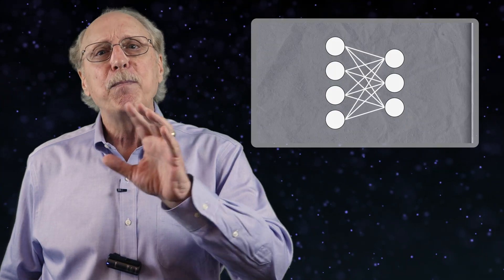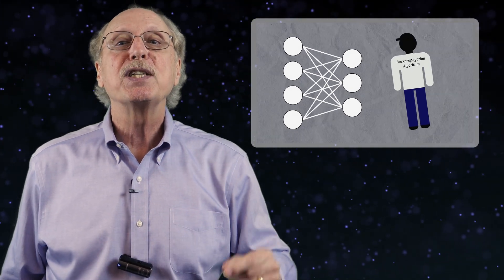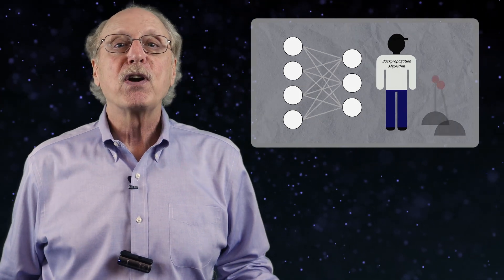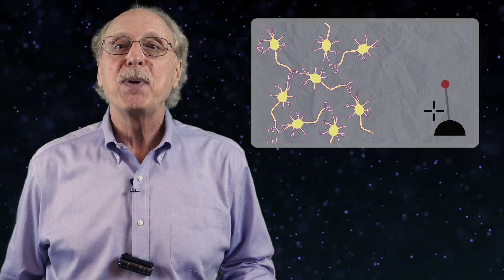In my mind, the biggest problem with the idea that machine learning is like your brain is that backpropagation needs to set specific synapses to specific weights. As far as we know, there is no biological mechanism by which this might be possible.